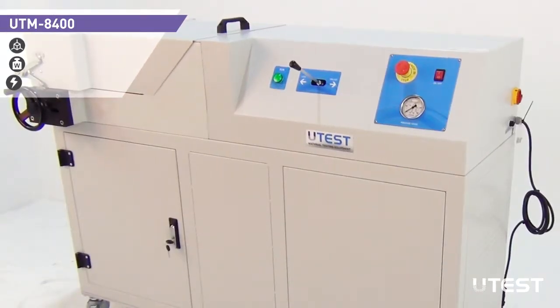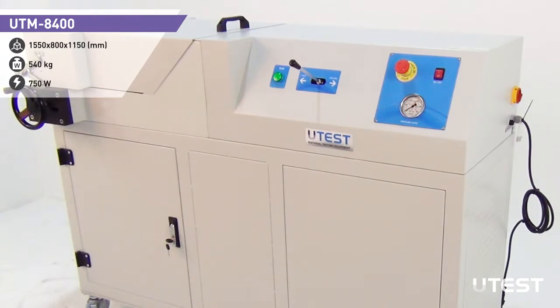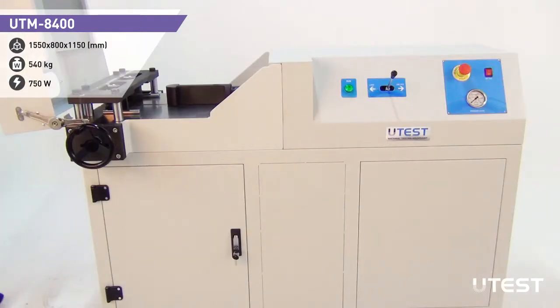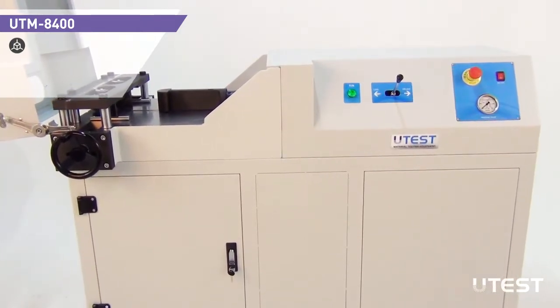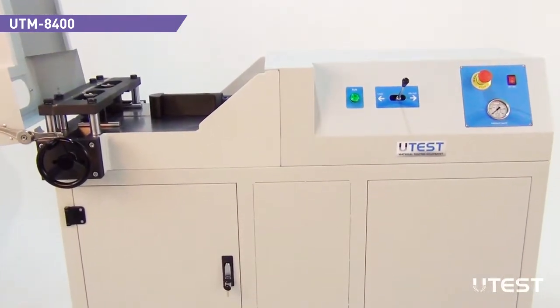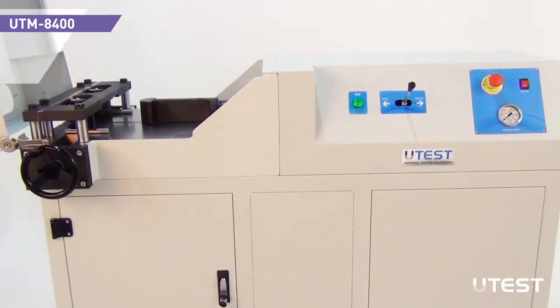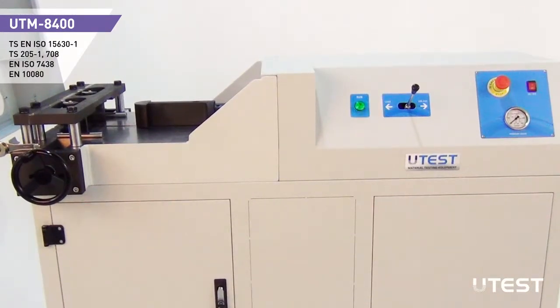The device can follow two methods of bending. The first one is bending the reinforced steel bar up to 90 degrees and then re-straightening back up to minimum at 20 degrees. The second method is bending up to 180 degrees.